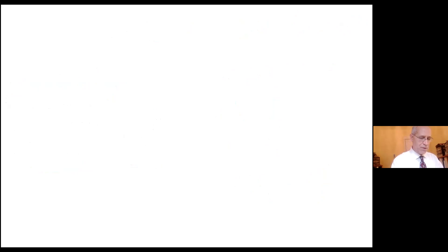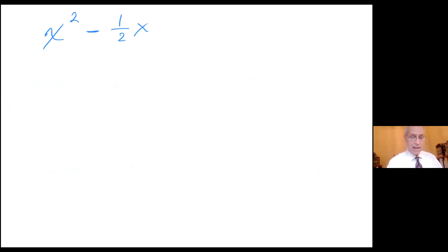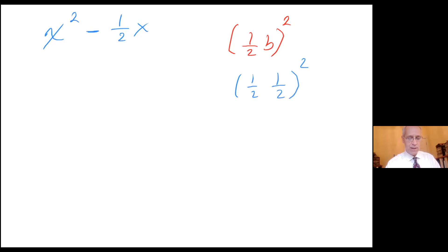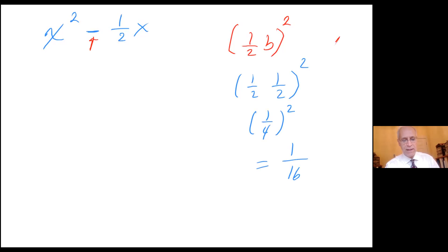Let's do one involving a fraction. Suppose I have an expression with leading coefficient of one: x squared minus one half x. Same thing. The magical number is one half of b, quantity squared. b in this case is one half. So one half of one half, quantity squared: that's one fourth, quantity squared, and that equals one over 16. So the magical number is one over 16. Remember that the sign plus or minus doesn't matter because we are squaring — negative one half times negative one half is positive one fourth, and positive one half times positive one half is also positive one fourth. So we don't have to worry about the sign.